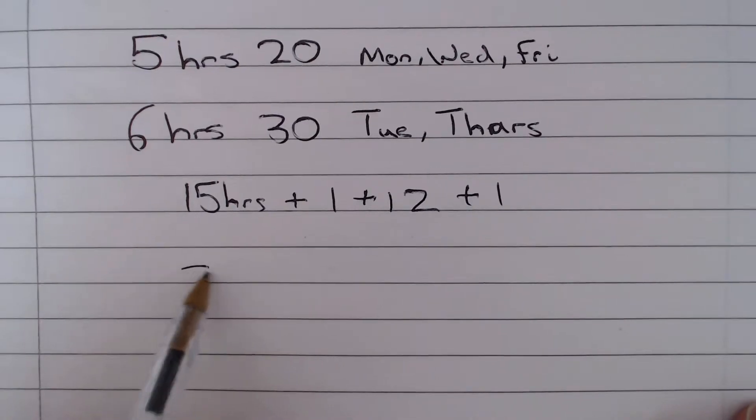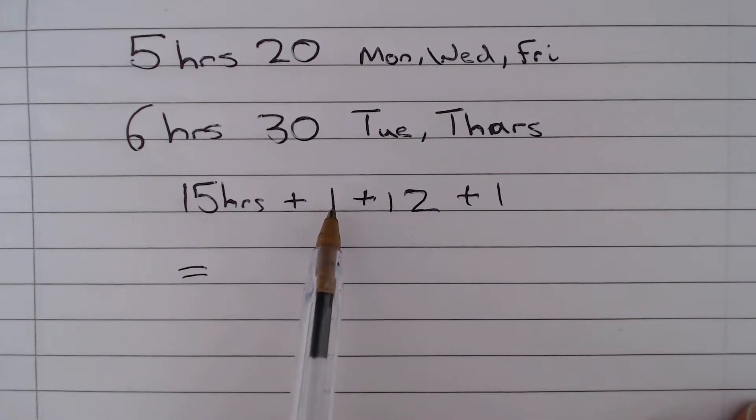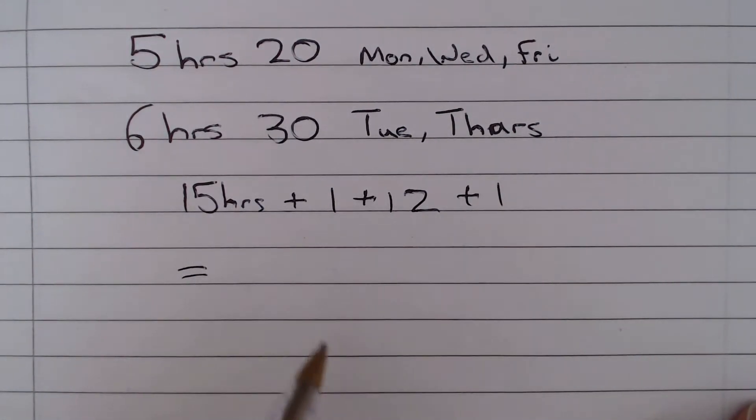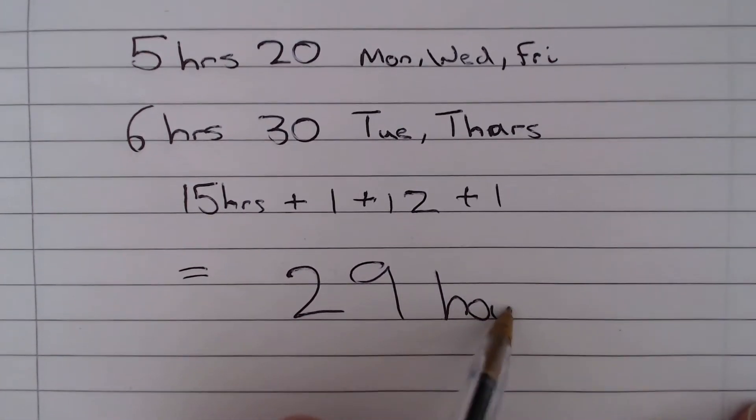So what we need to do is add these up. So we've got 15 plus the 12, which is going to give us 27, plus 1, 28, plus another 1, 29. So the answer to this question is going to be 29 hours.